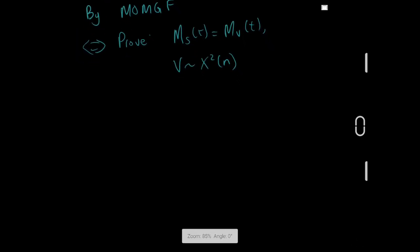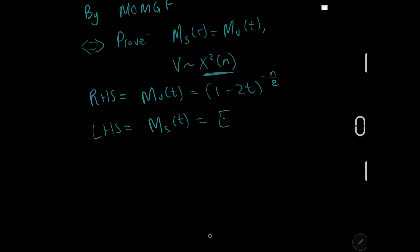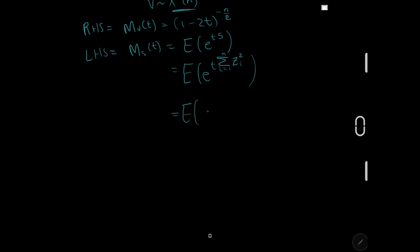Now we can get into the proof. If we look at the right-hand side, M_V(t) where V is chi-squared with n degrees of freedom, that is (1 − 2t) to the power of −n/2. The left-hand side is the moment generating function of S at t, which by definition of moment generating functions is E[e^(tS)]. Remembering what S equals, that is E[e^(t(Z1² + Z2² + ... + Zn²))].